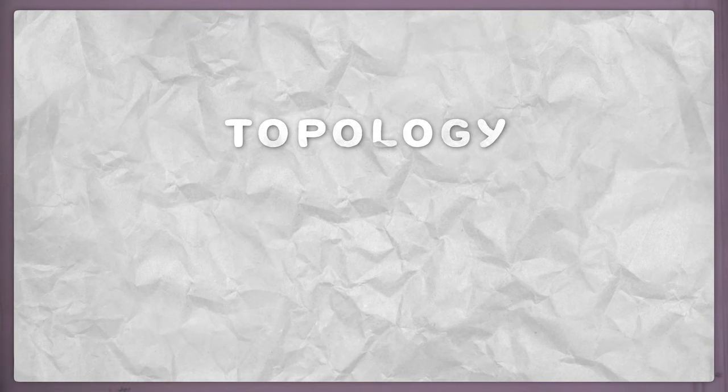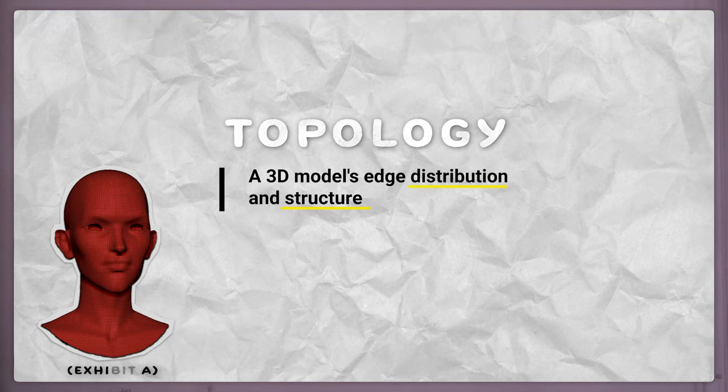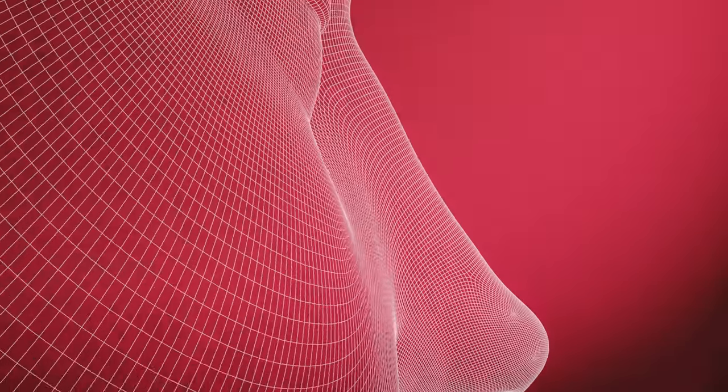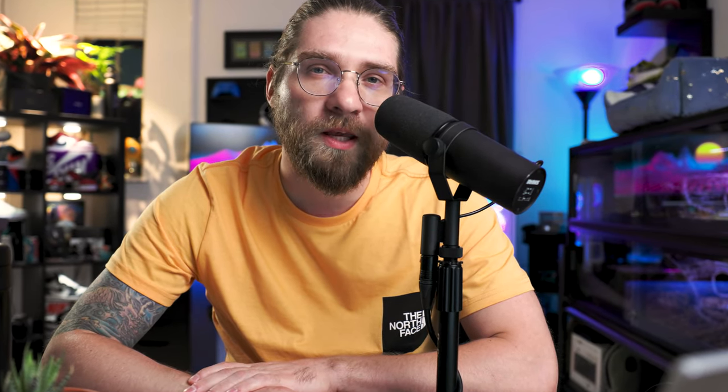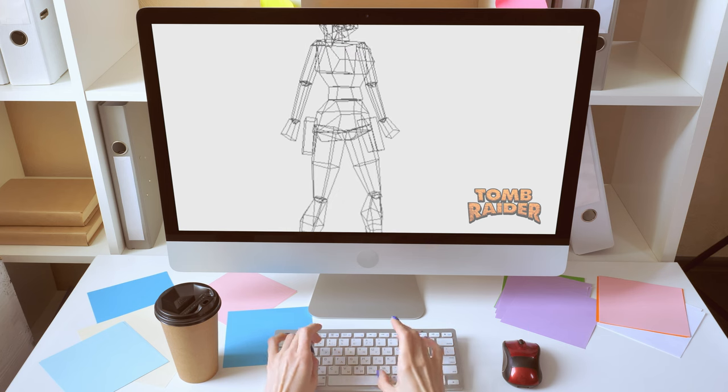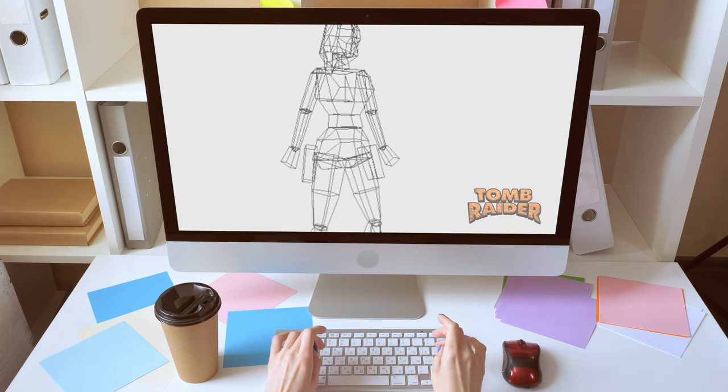What is topology? Topology is defined as a 3D model's edge distribution and structure. Simply put, it's the surface of a 3D model and how the geometry flows over the surface of that model. Before we jump into the technical aspects of topology, let's take a look at the history of games and how topology's importance has grown and evolved since the beginning. Early games like Tomb Raider were extremely low poly, with little need for complex topology.